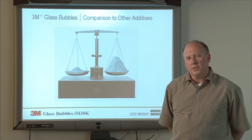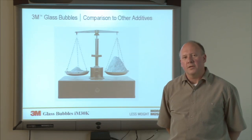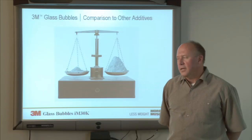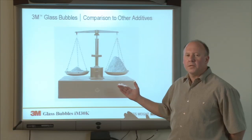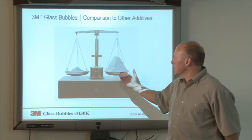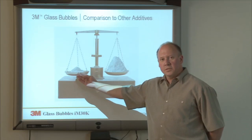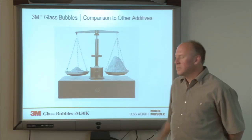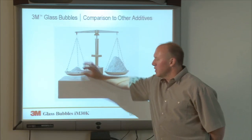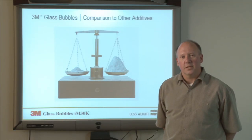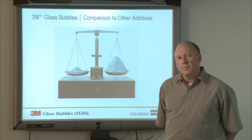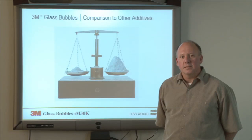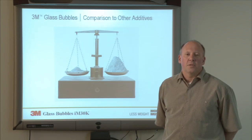So when you're reformulating with glass bubbles, remember to do it by volume. This slide shows an example comparing the glass bubble material to a more dense filler such as talc. At the same weight, you can see how much more volume the glass bubble takes up versus the small volume of a filler such as talc. The key message: reformulate your existing system — replacing dense fillers with glass bubbles — on a volume basis, not a weight basis.